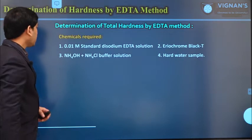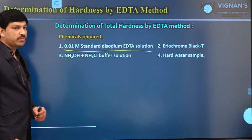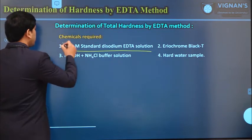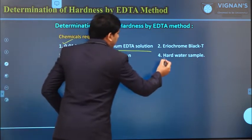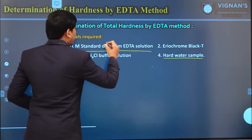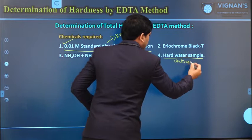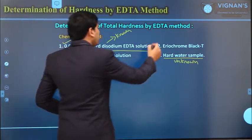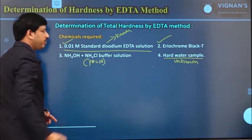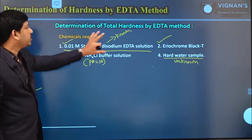Now, what are the chemicals required? For doing this titration we need standard disodium salt of EDTA solution as the known solution, and hard water sample as the unknown solution. We also need an EBT indicator and, in order to maintain pH value 10, we need ammonium hydroxide–ammonium chloride buffer solution. These are the chemicals required for this particular titration.